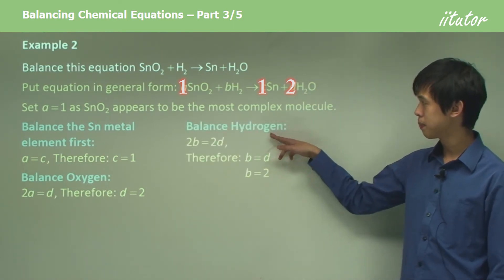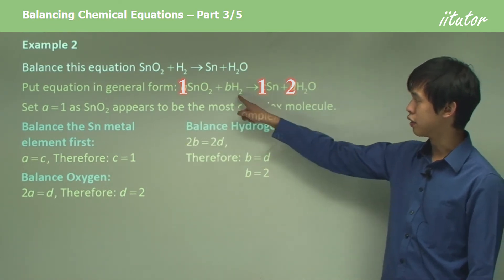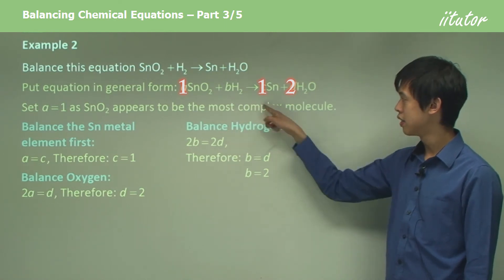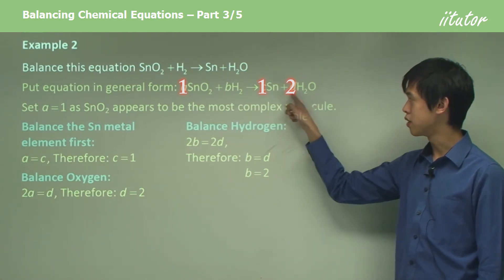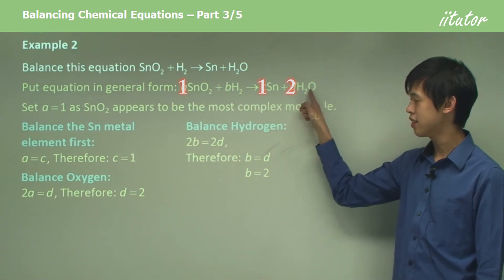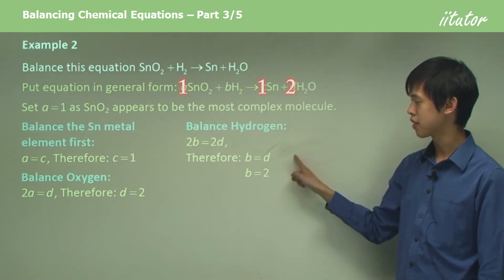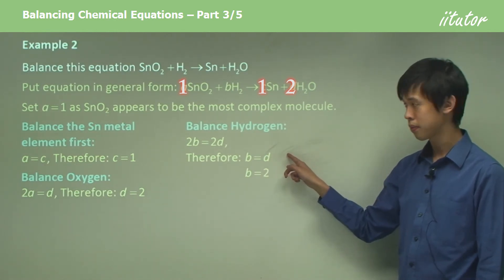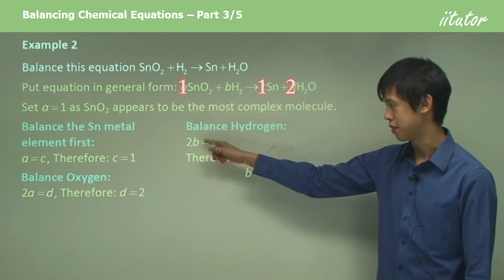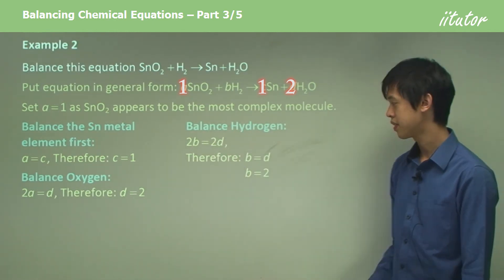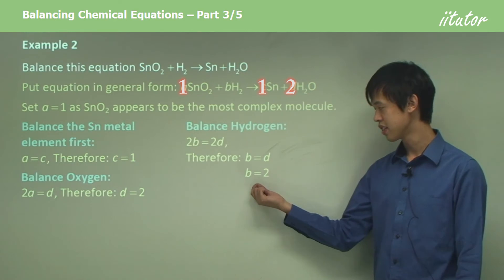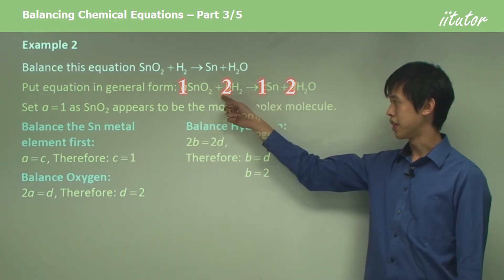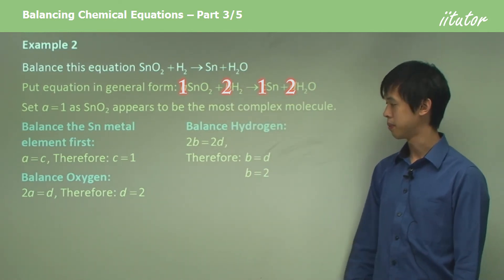We balance for hydrogen. There are 2B on the left-hand side and 2D on the right-hand side. So B equals D — cancelling the 2s — and therefore B equals 2.